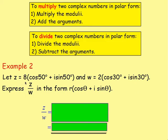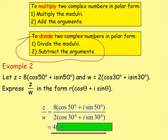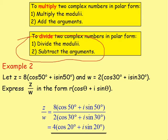Example 2: let Z equal 8(cos 50° + I sine 50°) and W equal 2(cos 30° + I sine 30°). This time we want to express Z over W in polar form. Because we have Z over W, we are dividing. With the moduli we divide: 8 divided by 2 gives 4. We subtract the arguments: 50 take away 30 gives 20. So Z over W equals 4 bracket cos 20 plus I sine 20.